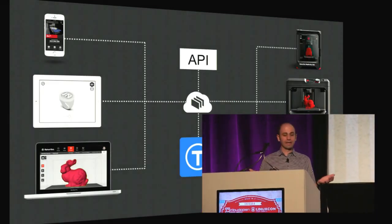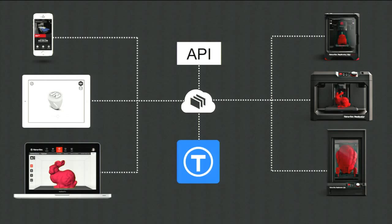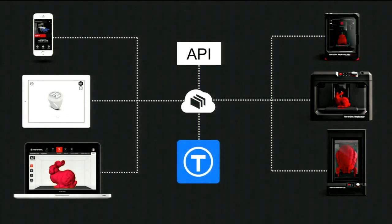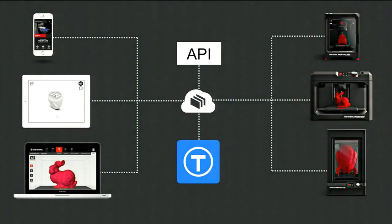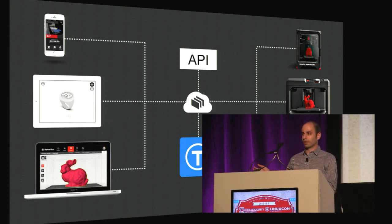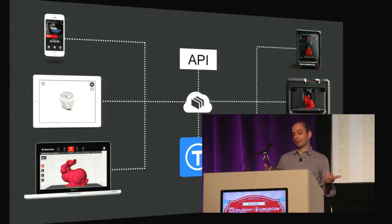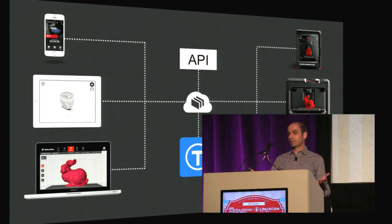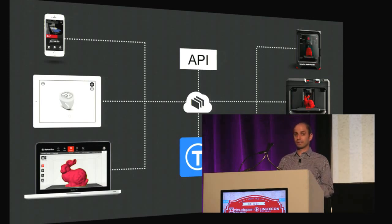What we're trying to build at MakerBot is a set of hardware products that are extensible, connected, enabled by embedded Linux, and connect up with this broad set of applications — and then make those applications open to the broader world and the broader community. That's the power of what Linux and the Linux community can bring to this: sharing these hooks and tools to the hardware will let people create and iterate on exciting new ideas. The explosion you saw in Linux hardware and Linux-based products is really analogous to what we'll see in 3D printing products in the coming years — both hardware products at every entry point and software products on every platform.